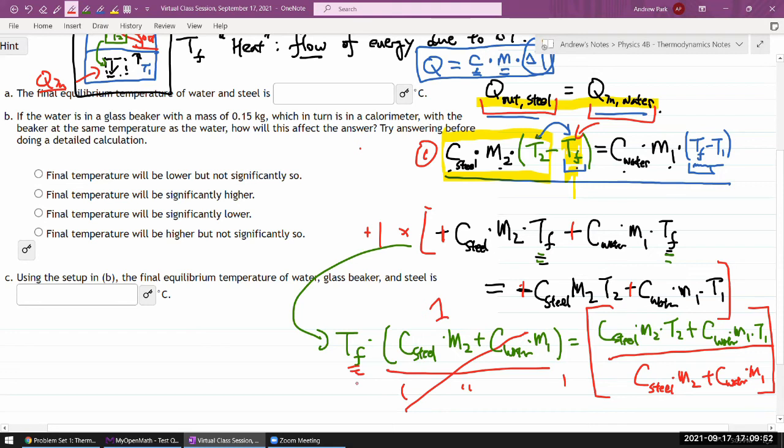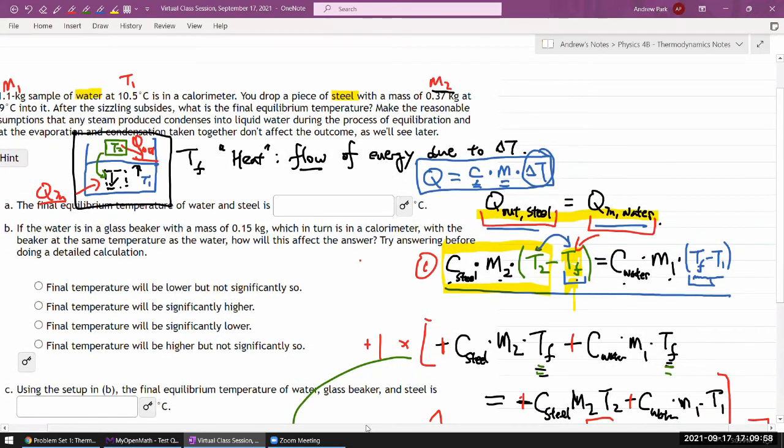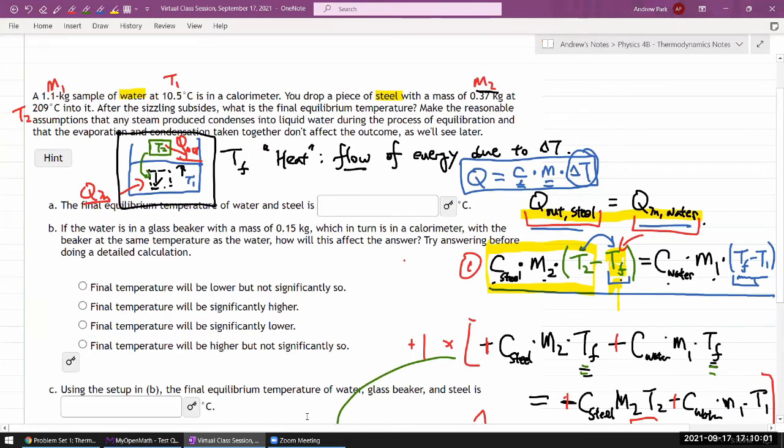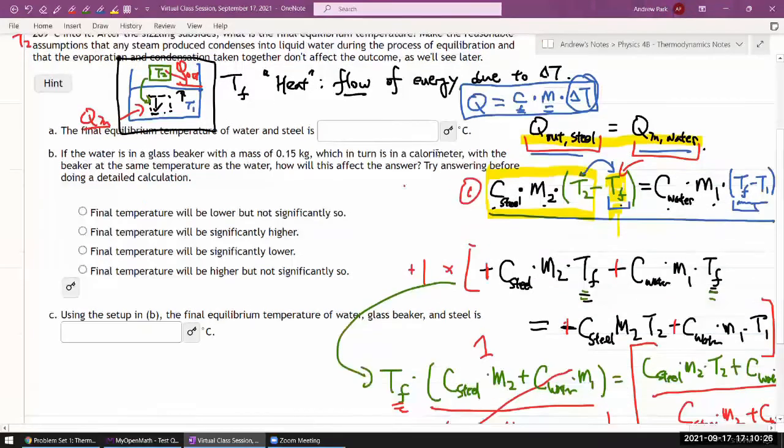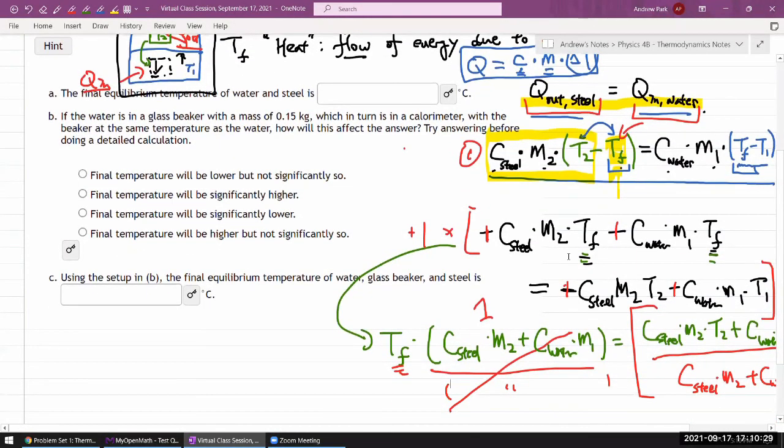When you get T final, you should confirm to verify that T final is in between 10.5 degrees C or whatever number generated for you, and 209 degrees C or whatever number generated for you. I'm going to guess here it's probably going to be around 30 degrees C maybe, or actually even less. There's more water than steel, so 20, 30 degrees C maybe. When you plug in numbers you will see. So that's the calorimetry problem solving for part A.